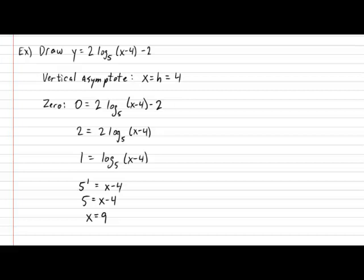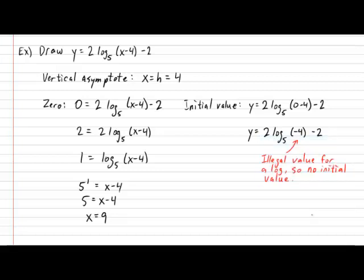Next, let's calculate our initial value. As with any other function, the simplest way to calculate the initial value is to set the value of x to zero and isolate your y. Let's proceed to simplify our expression. This gives us y equals 2 log base 5 of negative 4 subtract 2. At this stage, something peculiar happens. Good for you if you realized that the negative 4 violates one of the properties of a log. So therefore, we can safely conclude that this particular example possesses no initial value.